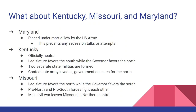Kentucky, Missouri, and Maryland were all slave states. Maryland was placed under martial law by the U.S. Army to prevent it from joining the Confederacy — having Washington D.C. surrounded by the enemy was not an option. In Kentucky, the legislature favored the south and the governor favored the north; two separate militias formed. Just before they could resolve their differences through violence, the Confederate Army invaded, and the government declared for the north because of that invasion.